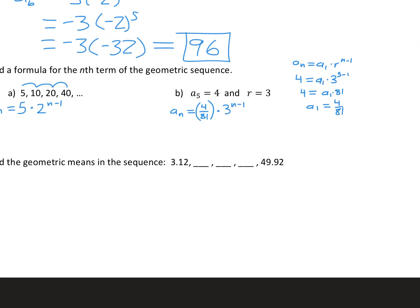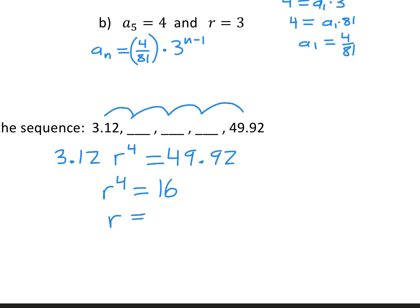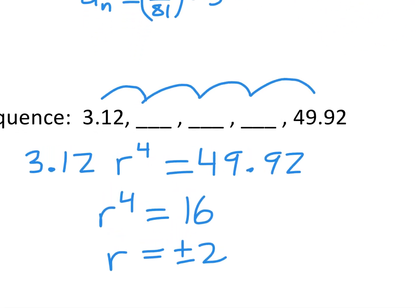For problem 6, we are finding geometric means again. We start with 3.12, multiplied by r once, twice, three times, four times. So 3.12 times r to the 4th equals 49.92. Divide both sides by 3.12, you get 16. Again, because the index is even, r could be positive or negative 2. So the first blank can be plus or minus: 3.12 times 2 is 6.24. The next blank has to be positive 12.48, and then the last one is positive or negative 24.96.